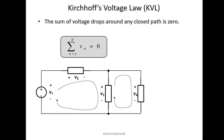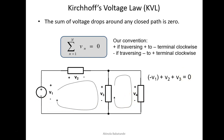We also have Kirchhoff's voltage law, which states that the sum of voltage drops around any closed path is zero. Mathematically, the summation of voltages equals zero. In this simple circuit, we have two closed paths. The first closed path has V1, V2, and V3; the second closed path has V3 and V4. The sign convention for KVL: if traversing from positive to negative terminal clockwise, we use a positive sign; if traversing from negative to positive terminal clockwise, we use a negative sign.